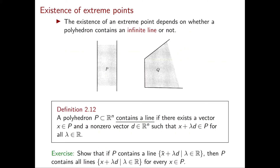In this video we will see two necessary and sufficient conditions for the existence of an extreme point, and one of them depends on whether a polyhedron contains a line or not. Next, let's define what it means for a polyhedron to contain a line.